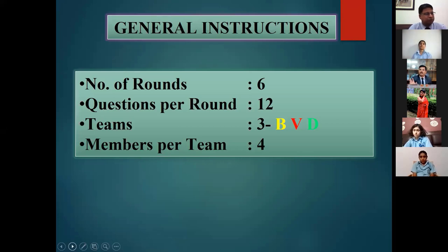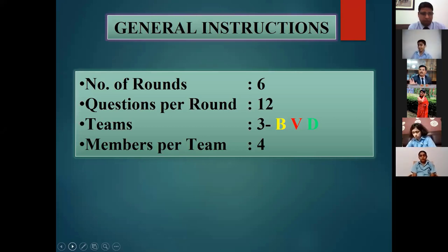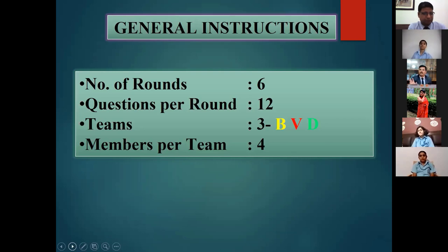Let me introduce all of you. From Buddha House we have Gargi, Arshita, Devansh Thakran and Samiksha Gar. The Vyas team comprises Riyan Maan, Chirag Tushir, Neha Bhardwaj and Girisha Bhaj. And Dyanan House team: Nishtha Kumar Rana, Vanshika, Tanishka Chaudhary and Samar.